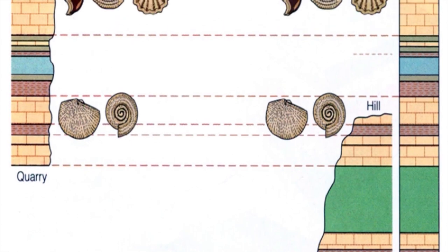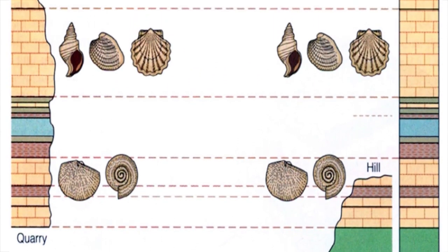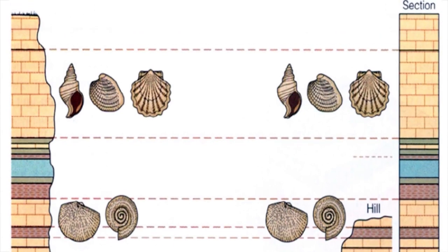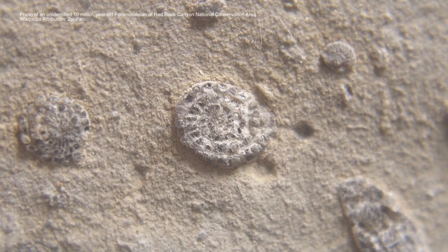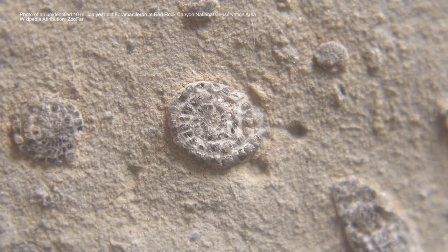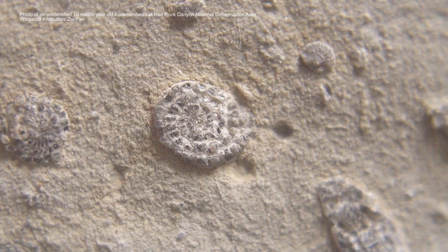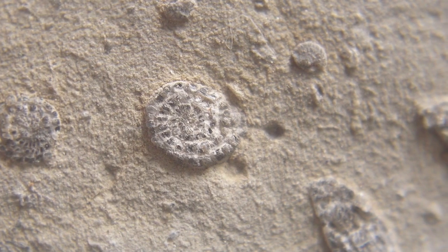Sometimes when you have rocks, you don't actually see all the different layers to be able to tell which layer is older and which is younger. So you're going to use the fossils or the body parts and plant bits that you find in those rocks to tell you what's older and what's younger.